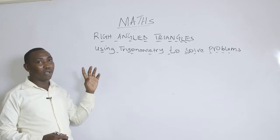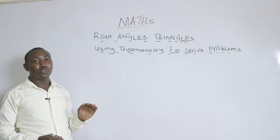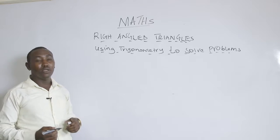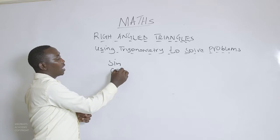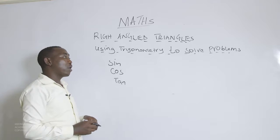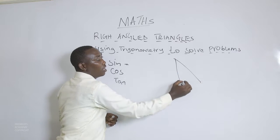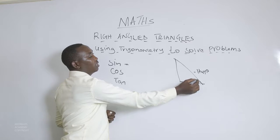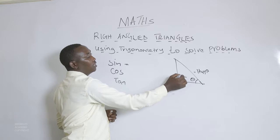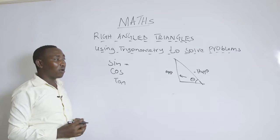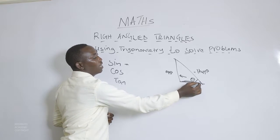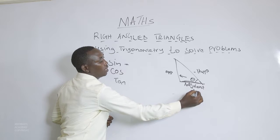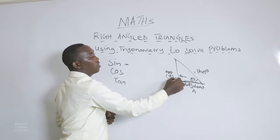We have also used the Pythagoras theorem and the relationships of triangles to solve and obtain different angles using the trigonometric ratios — sine, cosine, and tangent. Given a right angle triangle, the longer side is the hypotenuse, the angle theta is the required angle, the side opposite to theta is the opposite side, and the remaining side is the adjacent. These sides are labelled O, A, and H respectively.